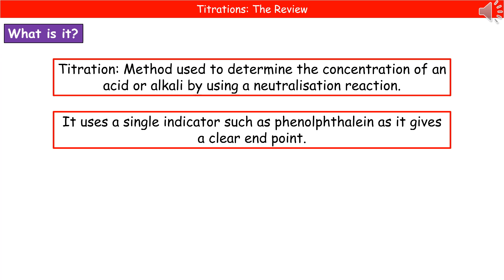In order to do this, we use something called a single indicator, because that has a clear end point. A single indicator, for example, would be phenolphthalein, because at the end of the reaction it goes from colourless to pink. So it's a really clear end point, and there's no doubt about when that reaction has ended.